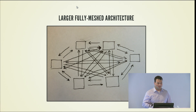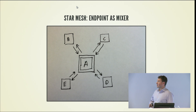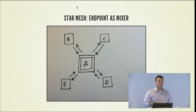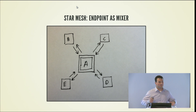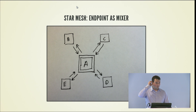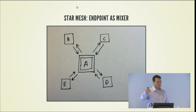So what are some ways we can get around this? One, we can change our architecture and go to a star mesh, where we locate maybe a node with massive processing power — someone's desktop computer. Clients B, C, D, and E — maybe mobile clients or less powerful laptops — can offload some of that mixing and transcoding work to A.